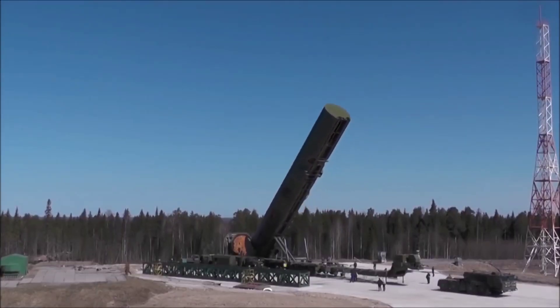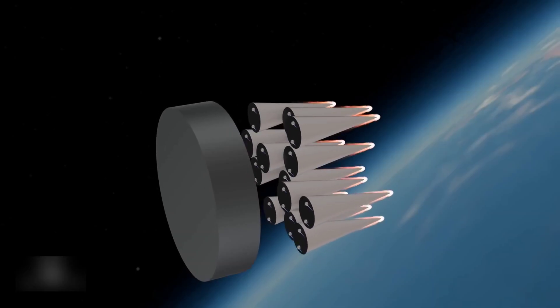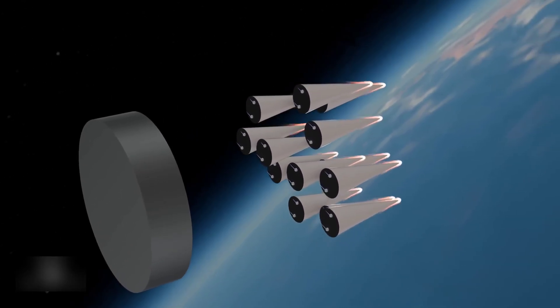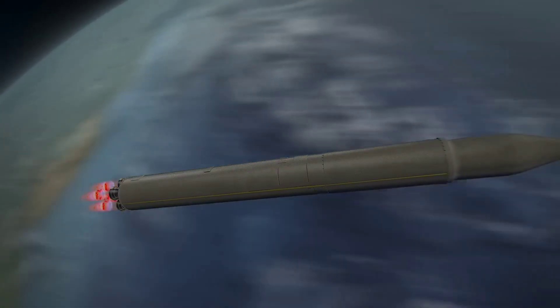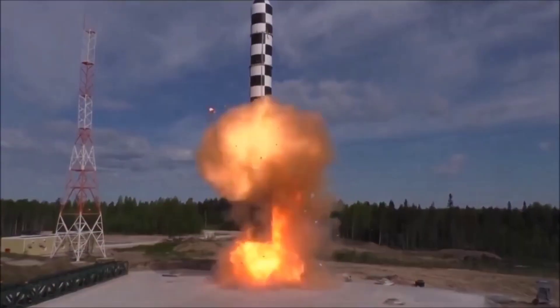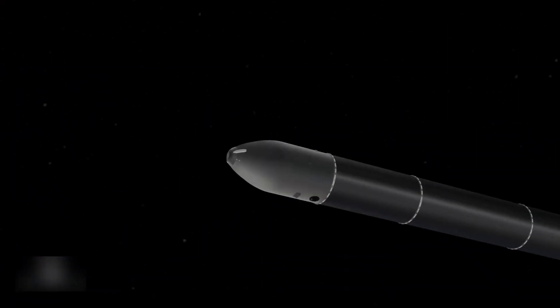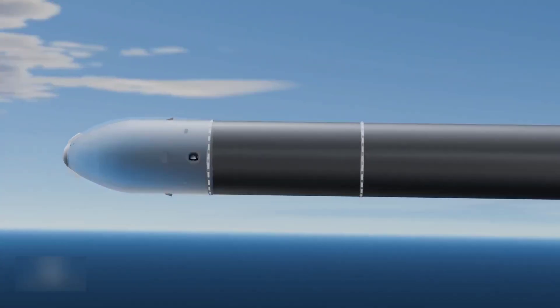Standing over 35 meters tall and weighing more than 200 tons, it can carry up to 15 independently targeted nuclear warheads, or even boost a hypersonic glide vehicle like the Avangard. Once launched, the Sarmat exits the atmosphere before releasing its warheads, which can reach speeds of Mach 20 as they re-enter the Earth's atmosphere.